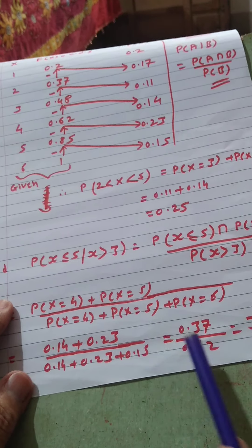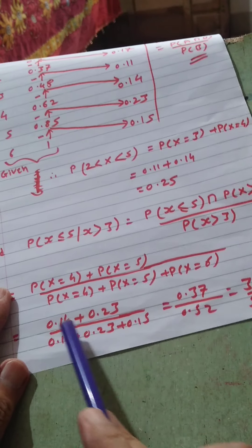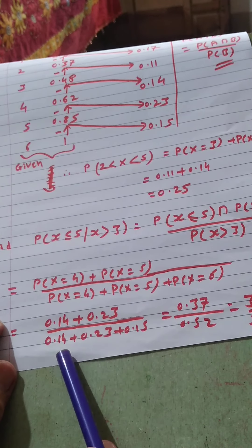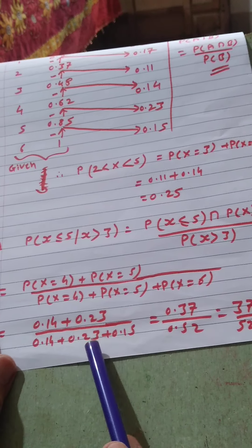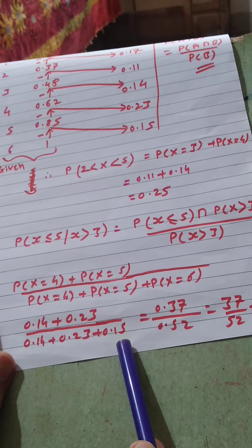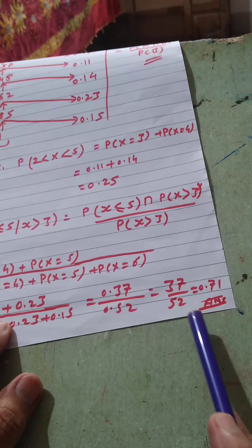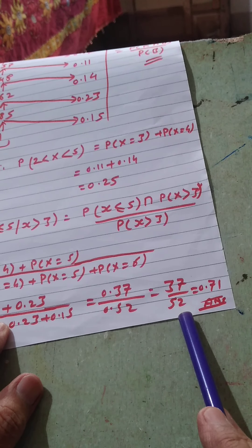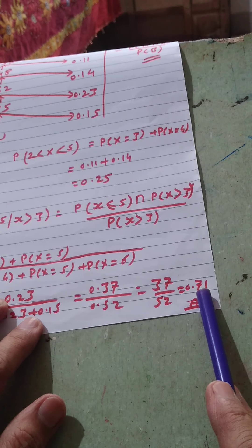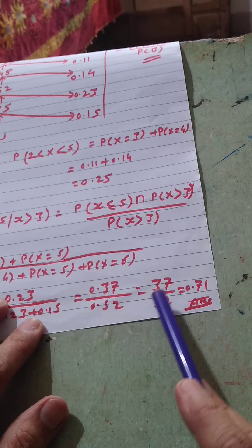Now P(2<X<5) means P(X=3) plus P(X=4), since X must be strictly greater than 2 and strictly less than 5. That is 0.11 plus 0.14, which equals 0.25.